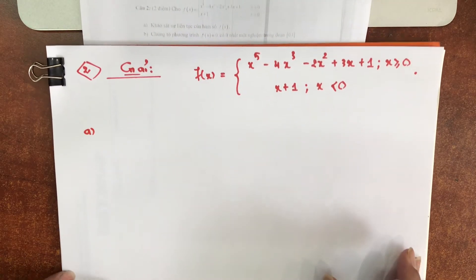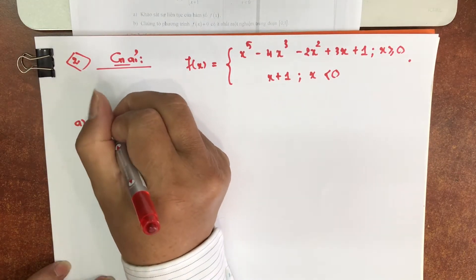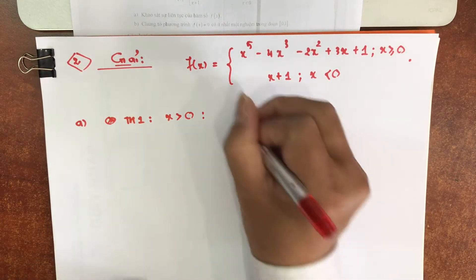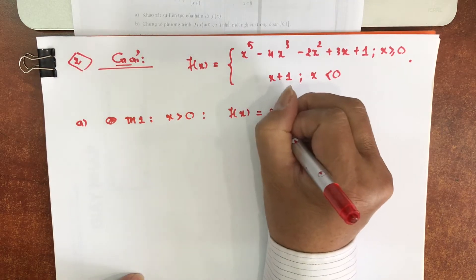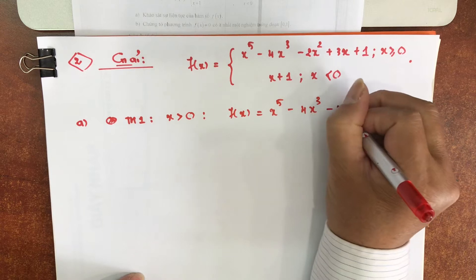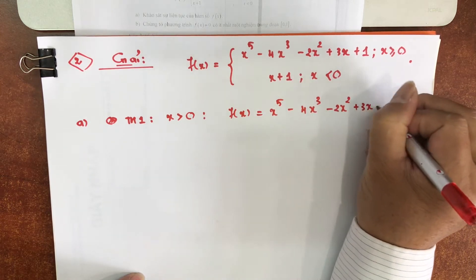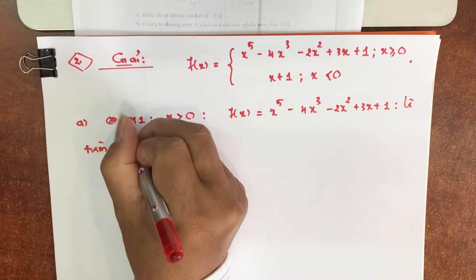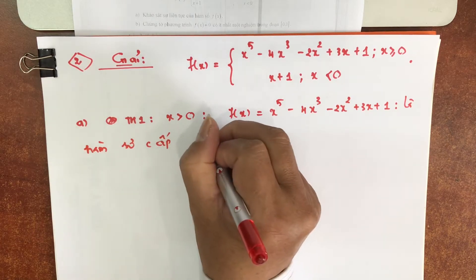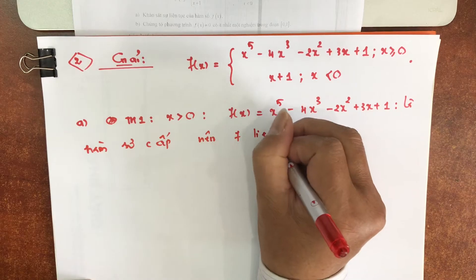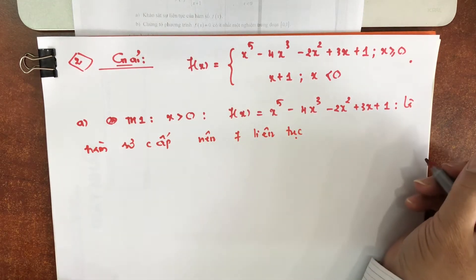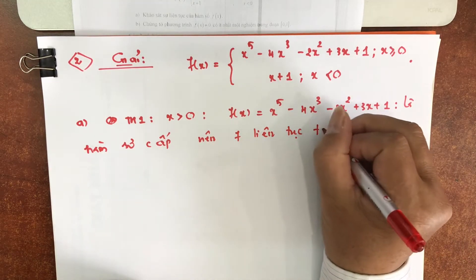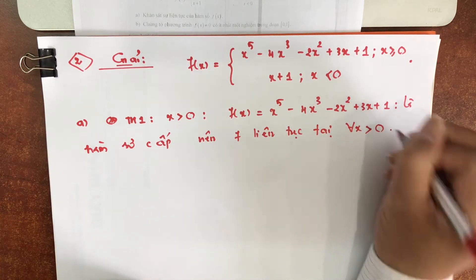Khảo sát sự liên tục. Trường hợp 1: x lớn hơn hoặc bằng 0, nên hàm F liên tục. Hàm sơ cấp thì liên tục trên miền xác định. Cho nên các anh chị thấy rằng là liên tục tại mọi điểm chưa. Miền xác định của nhánh này là như vậy.